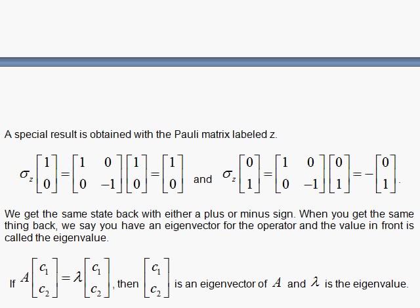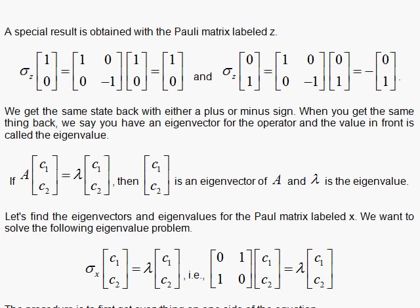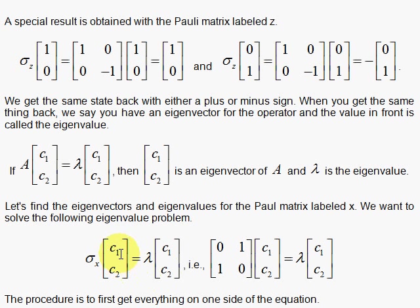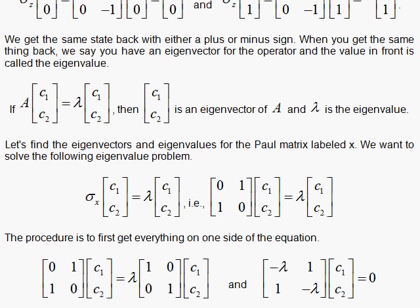Here is the general rule of some operator A operating on a spinor. You get the same spinor back with lambda. Then this spinor that came back is called the eigenvector, the eigenstate, or the eigenspinor. And the lambda that's in front is the eigenvalue. Let's find the eigenstates and eigenvalues for the sigma x operator. We set it up this way. We have the eigenstate must come back, and there's some lambda there. So we have 0, 1, 1, 0 times the eigenstate must bring the same eigenstate back with some lambda.